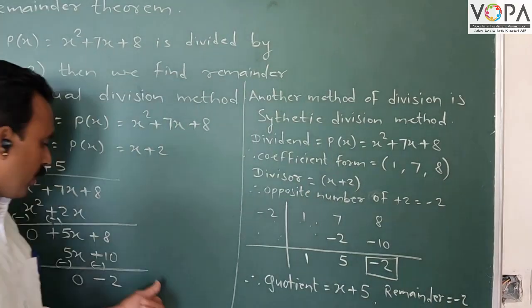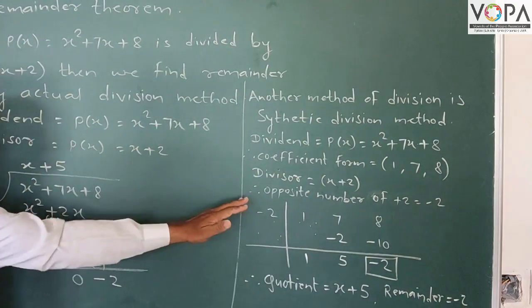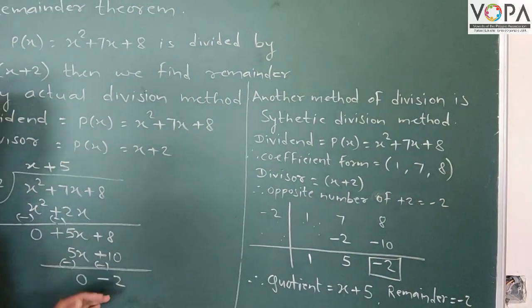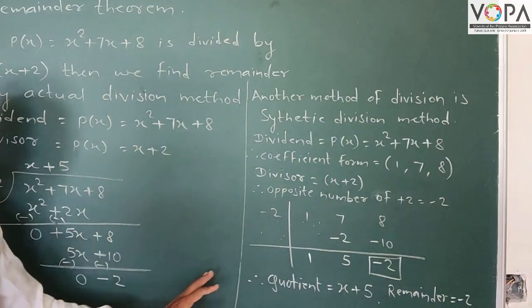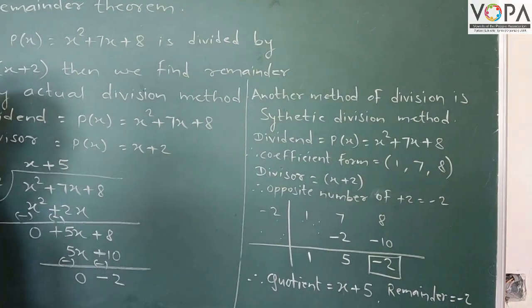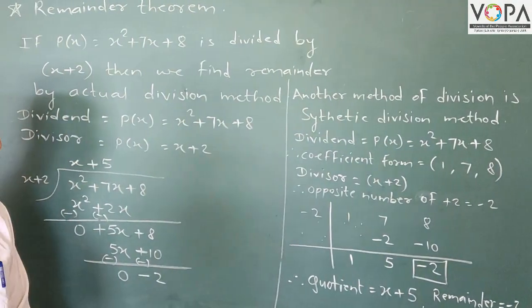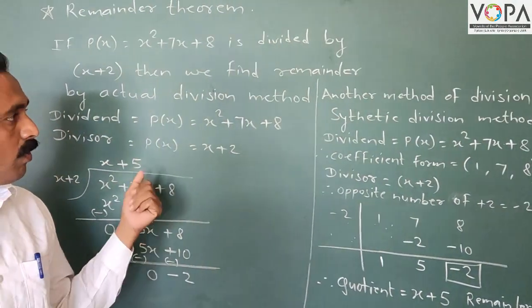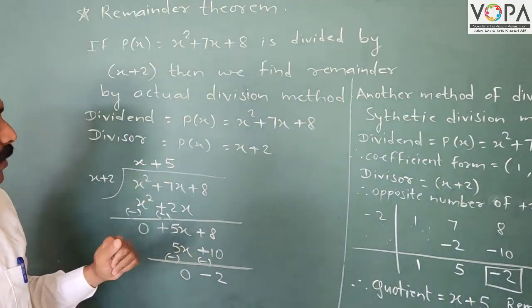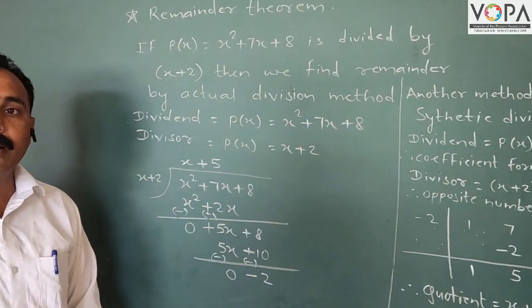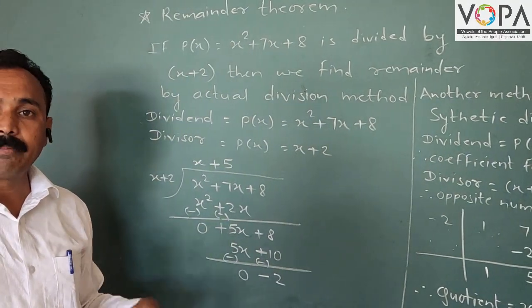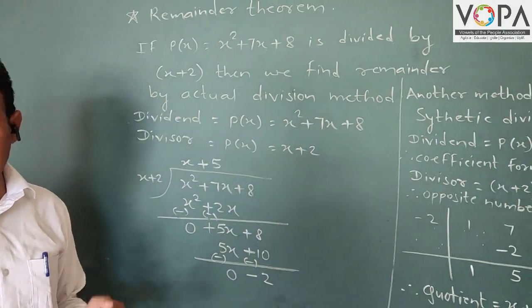Therefore, in both methods, the remainder is minus 2 and the quotient is x + 5. Now we will find the remainder by the Remainder Theorem method.